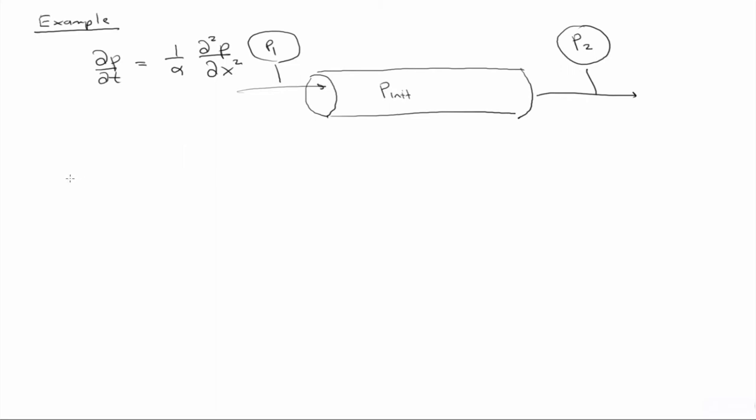And so the boundary conditions then for this example would be that p at x and all times zero—I'm sorry, p at x and time zero is equal to p_initial. And we'll go ahead and give that a value because we're going to try to solve this in closed form, so we'll just say that that's equal to zero. So there's initially no pressure, no initial pressure.